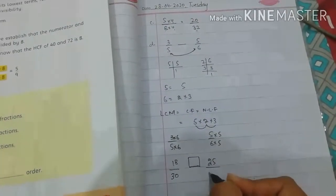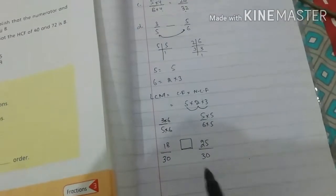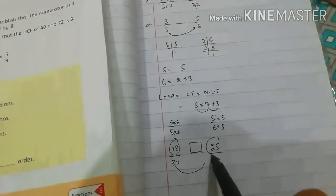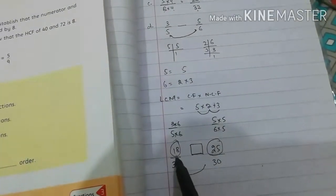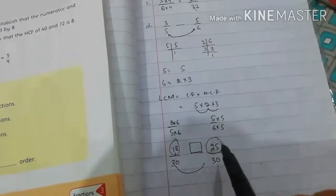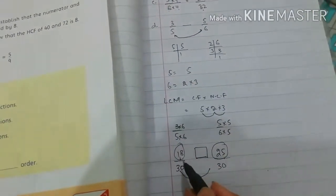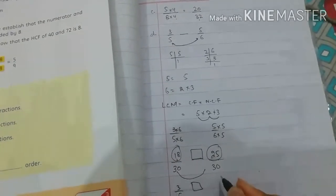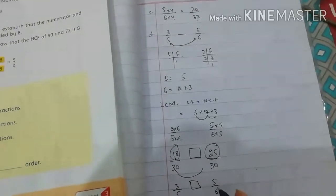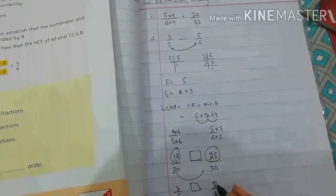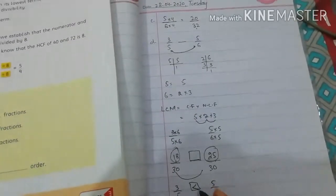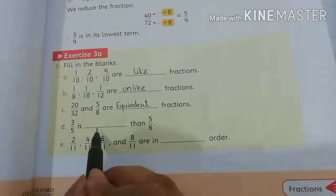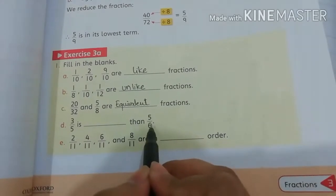We get: 3 × 6 = 18 and 5 × 6 = 30, so 18 by 30. And 5 × 5 = 25 and 6 × 5 = 30, so 25 by 30. Now denominators are the same. Comparing numerators: 25 is greater than 18, so 3 by 5 is less than 5 by 6.